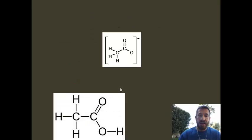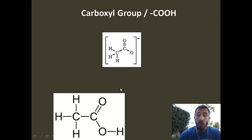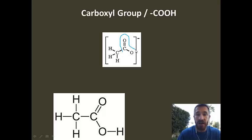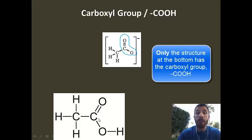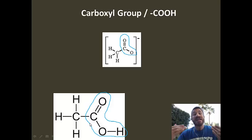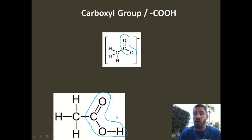These two structures you may recognize. One at the top is the acetate polyatomic ion, and the thing at the bottom is actually acetic acid. Both of those contain the carboxylic acid group, so they're organic acids. I'll circle it in the polyatomic ion — notice this doesn't contain the full carboxylic acid group because the hydrogen is not attached. But in acetic acid below, I'm circling the entire carboxylic acid. It contains a COOH, and that's what makes acetic acid — or vinegar — an acid.